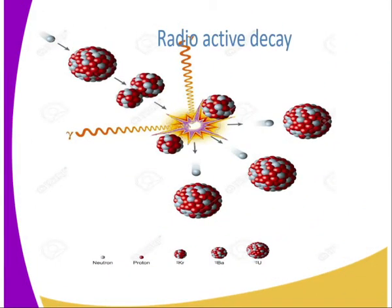Regarding radioactive decay, we have previously mentioned that an unstable nuclide disintegrates — that is, it breaks up to yield a new nuclide of different composition with emission of particles and radiation. When this happens, the mass of the original nuclide decreases with time since there is spontaneous disintegration. As the radioactivity continues, the mass number decreases with time.